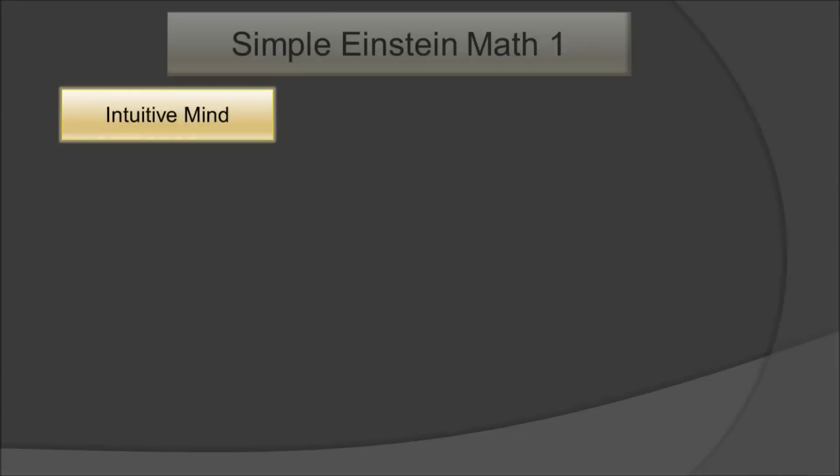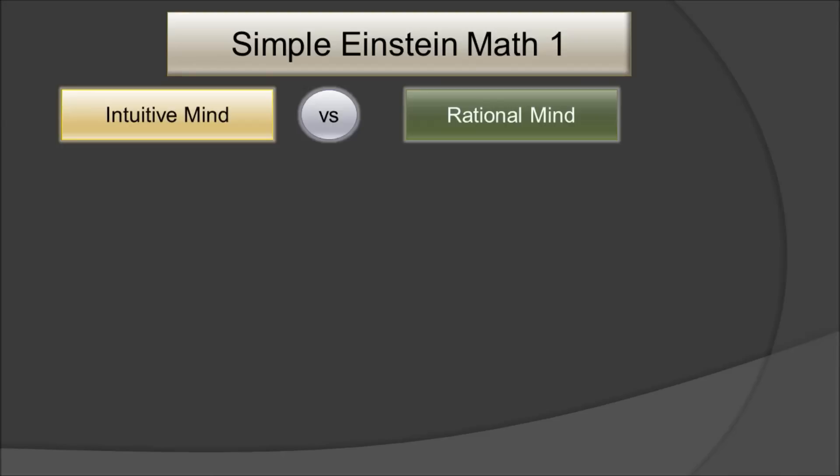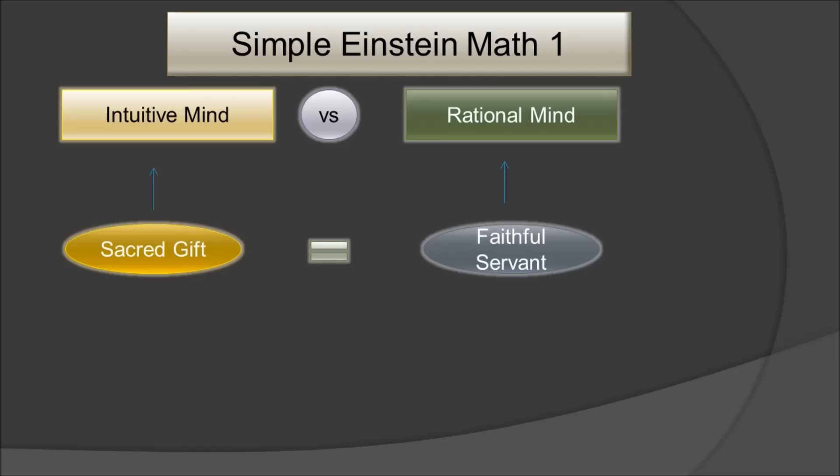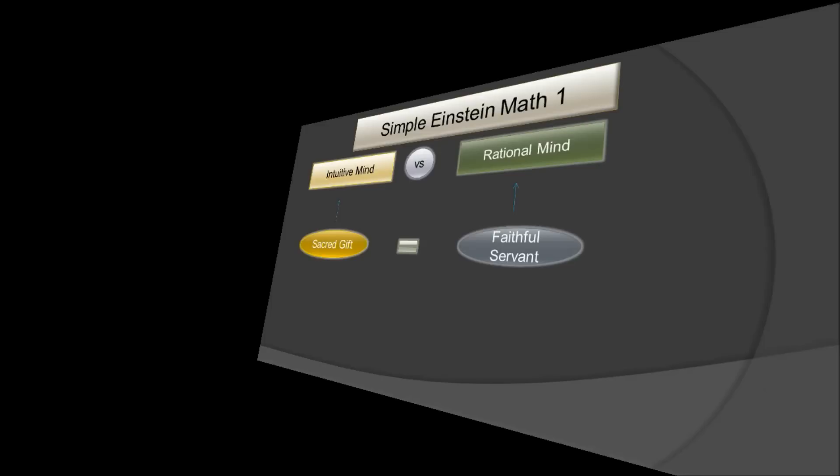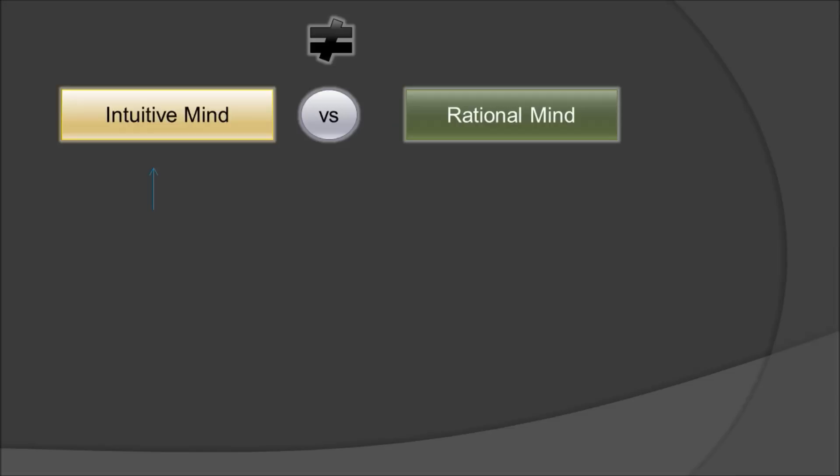Let's start with the first one: intuitive mind versus rational mind. I brought this up to illustrate how to use inequality, not only equations and equality. In the ideal case, intuitive mind and rational mind are used half and half. The sacred gift is the intuitive mind and the faithful servant is the rational mind if they are equal. But in reality, they are not equal, so we have to use the inequality sign.